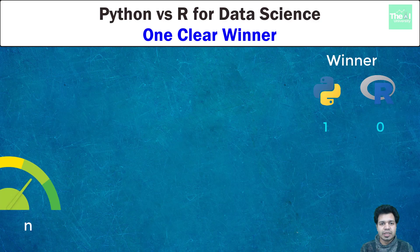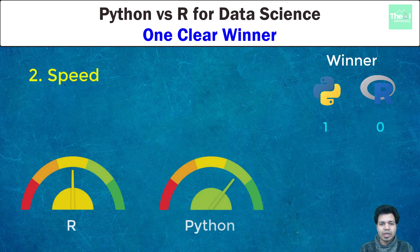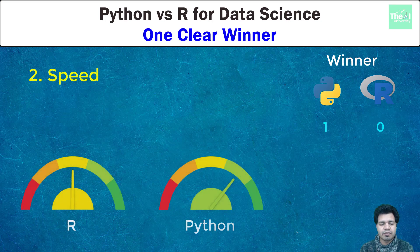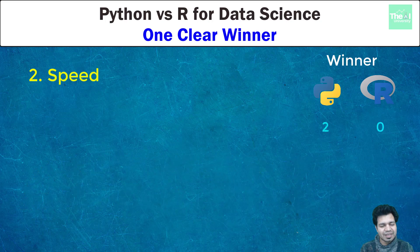The second parameter is speed. In today's world it's very important that we get output in the matter of nanoseconds if we are building any application. Python is 8 times faster than R, which is why we see most applications related to Python running in production these days. R is mostly used by academicians and researchers, and there are efforts going on to make it production-grade these days. So Python outperforms R here as well.